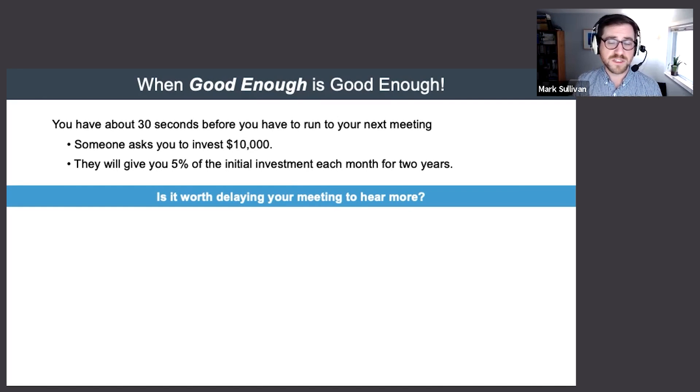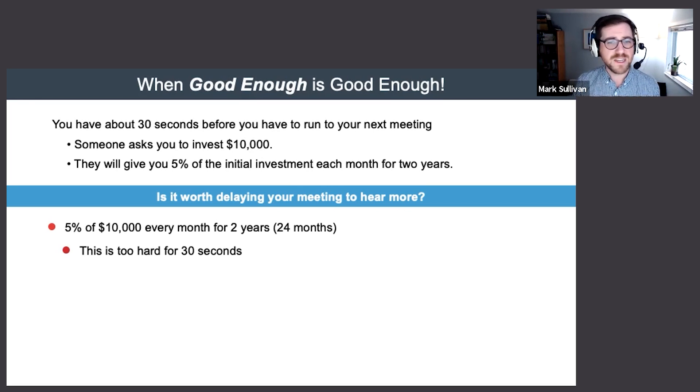What do we do? Time to delay the next meeting, hear a little bit more? Can we dismiss this out of hand? We're going to need to do a little quick math here, a little thinking on our feet. Messy numbers along the way - we're probably not going to get this done in 30 seconds. Can we simplify? Can we turn the messy numbers into some nicer ones? Well, 5% is half of 10%, so I could rethink this investment as something that's going to pay back 10% every two months.